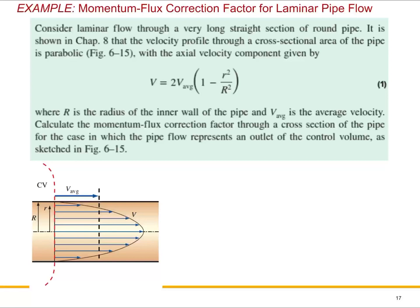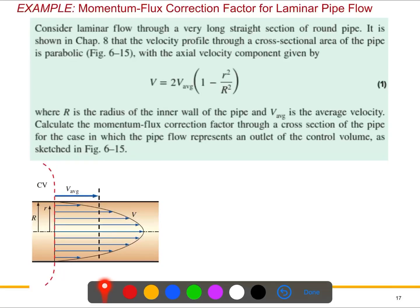This is about the momentum flux correction factor for laminar pipe flow. This is the schematic — you can see the pipe cross-sectional view, this is the radius R, and it is a fully developed flow profile. This dotted line shows the control volume, and this black dotted line is the average velocity. You already know why we usually use the average velocity for this sort of problem.